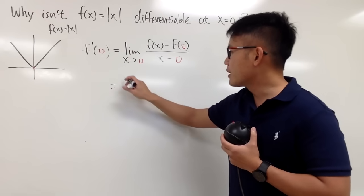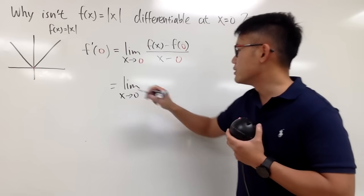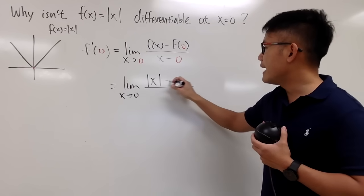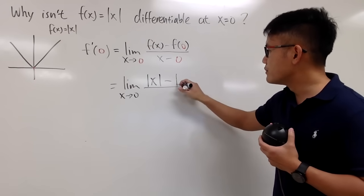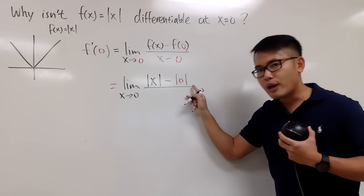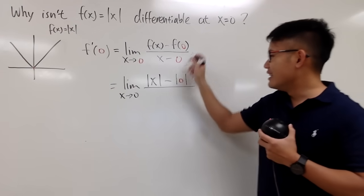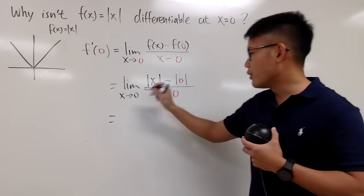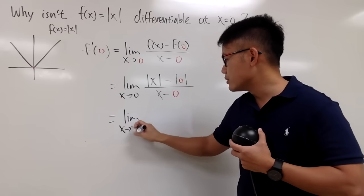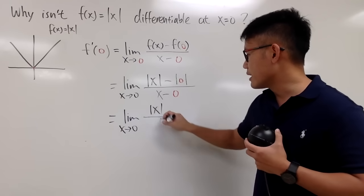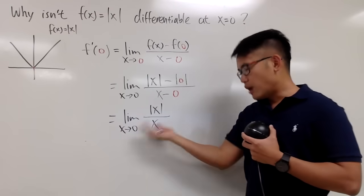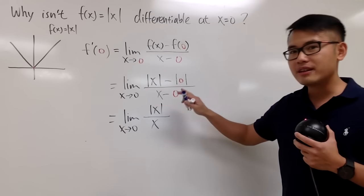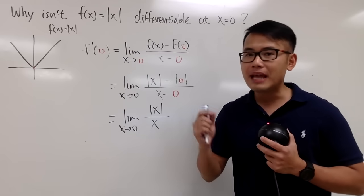Let's see. We write down the limit as x approaches 0. f of x is the absolute value of x, minus f of 0 which is absolute value of 0 — that's just 0 — over x minus 0. So all in all, we have the limit as x approaches 0 of absolute value of x over x. Can we just plug in 0? No, because that way we get 0 over 0. That's an indeterminate form, which means we have to do more work.